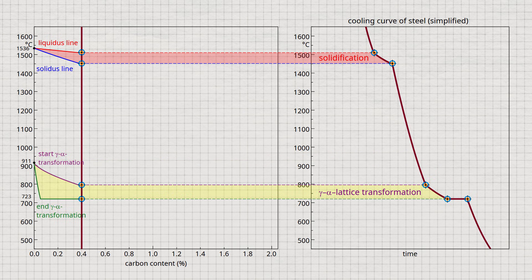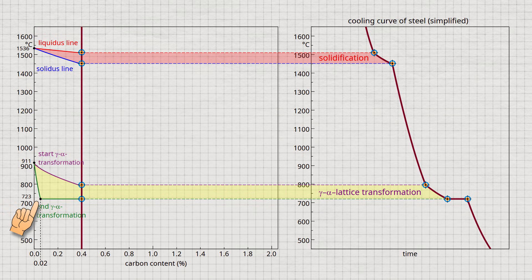The onset of the gamma-alpha transformation is shifted to lower temperatures by the carbon. Nevertheless, an additional thermal arrest is observed at the end of the gamma-alpha transformation. We will later explain in detail what this is exactly due to. From a carbon content of about 0.02%, the lattice transformation from gamma to alpha iron always ends at 723 degrees Celsius at a thermal arrest.